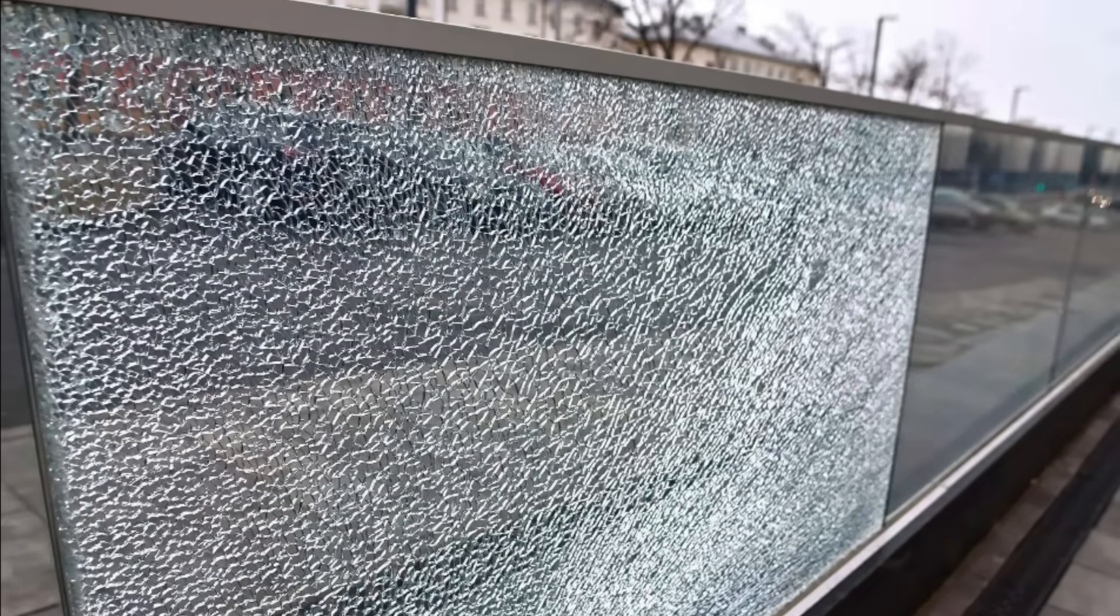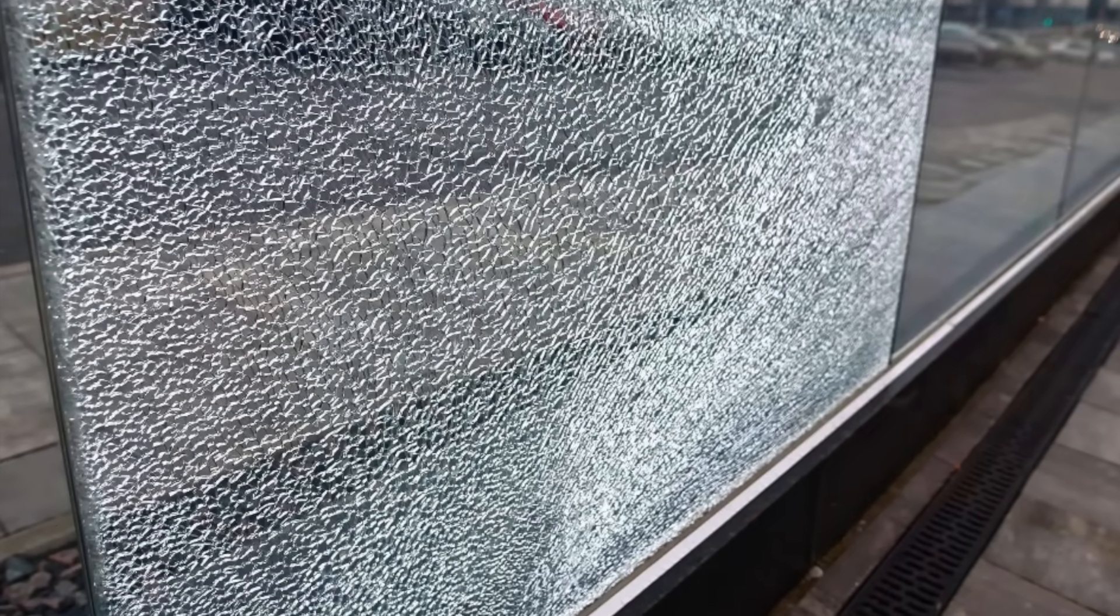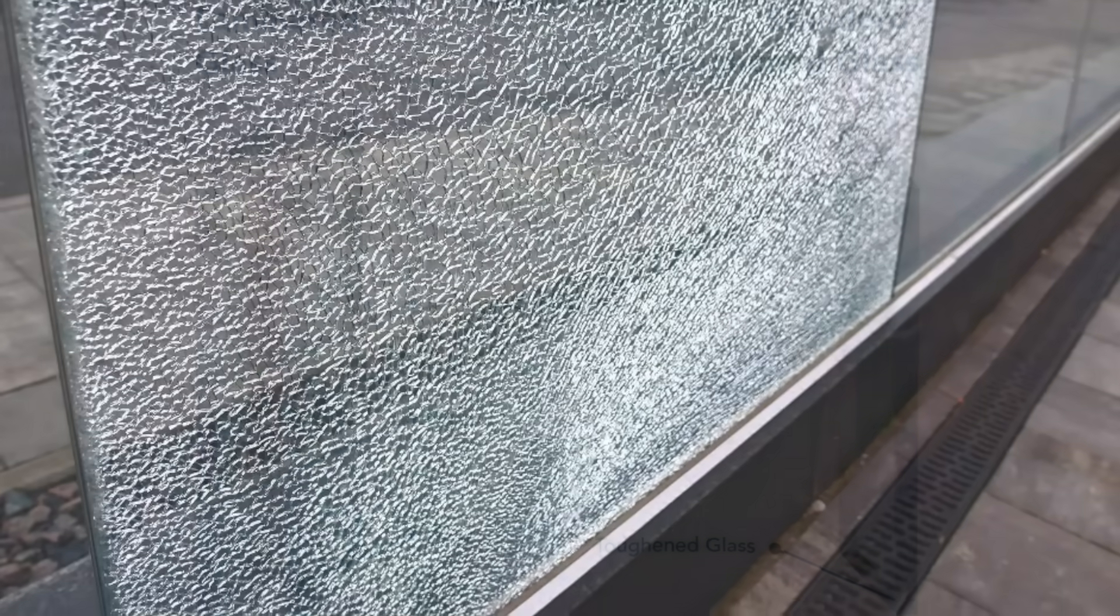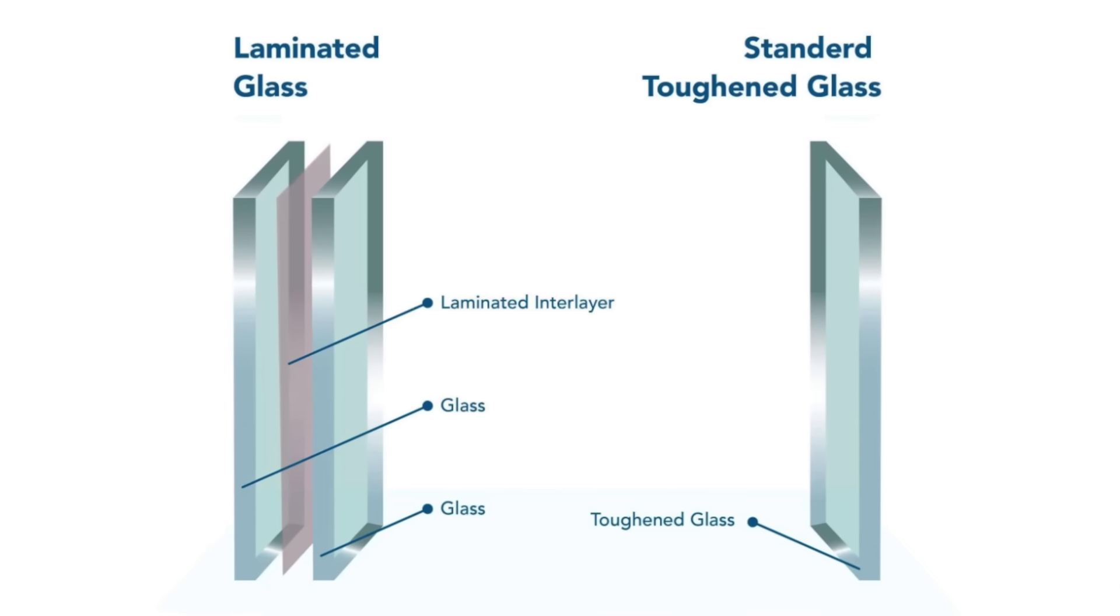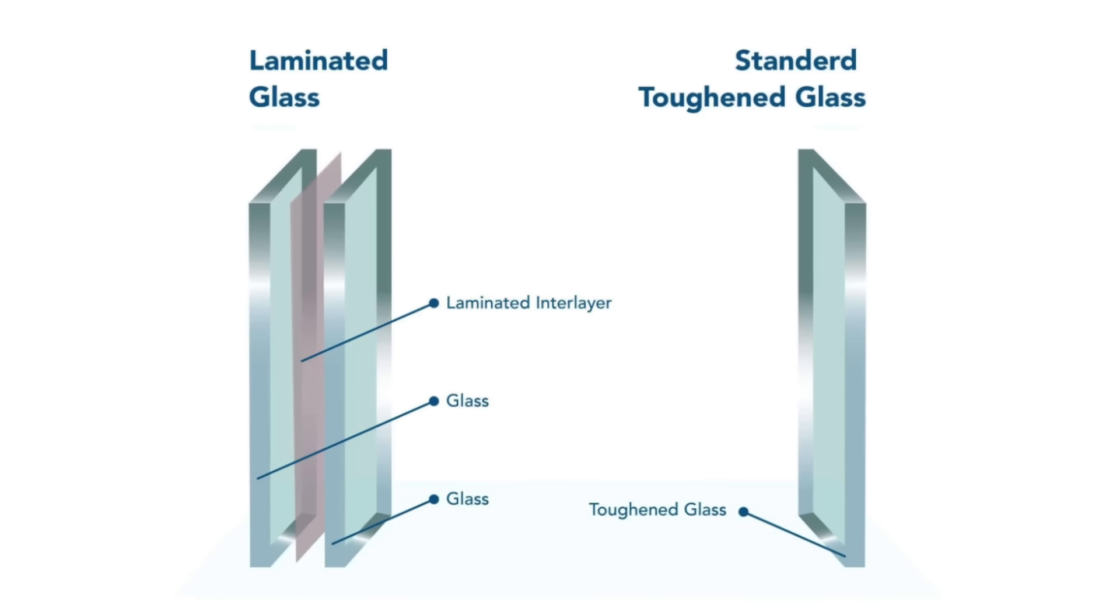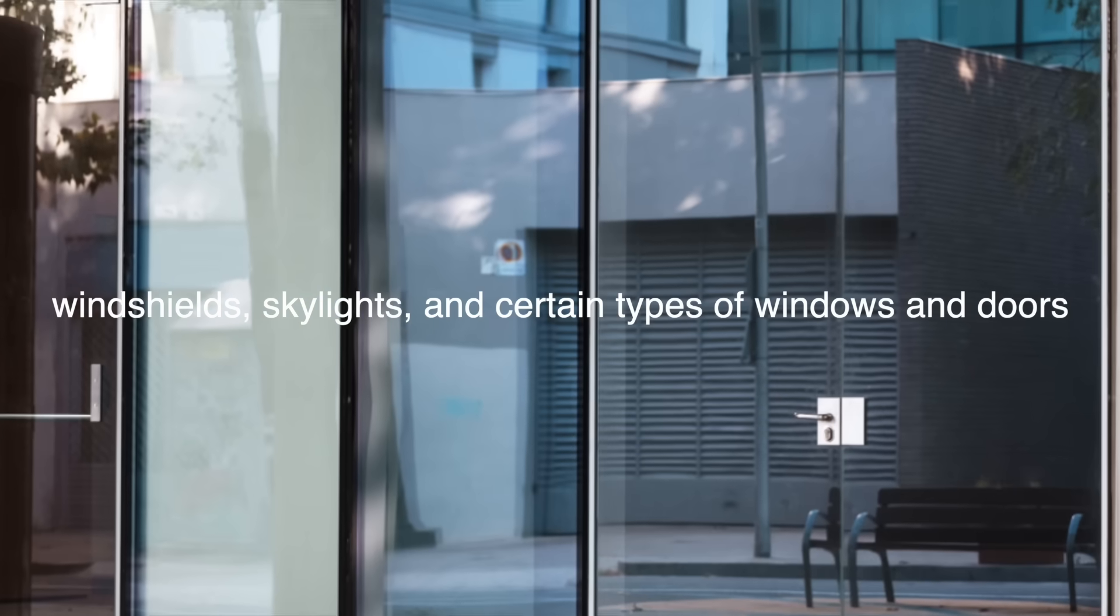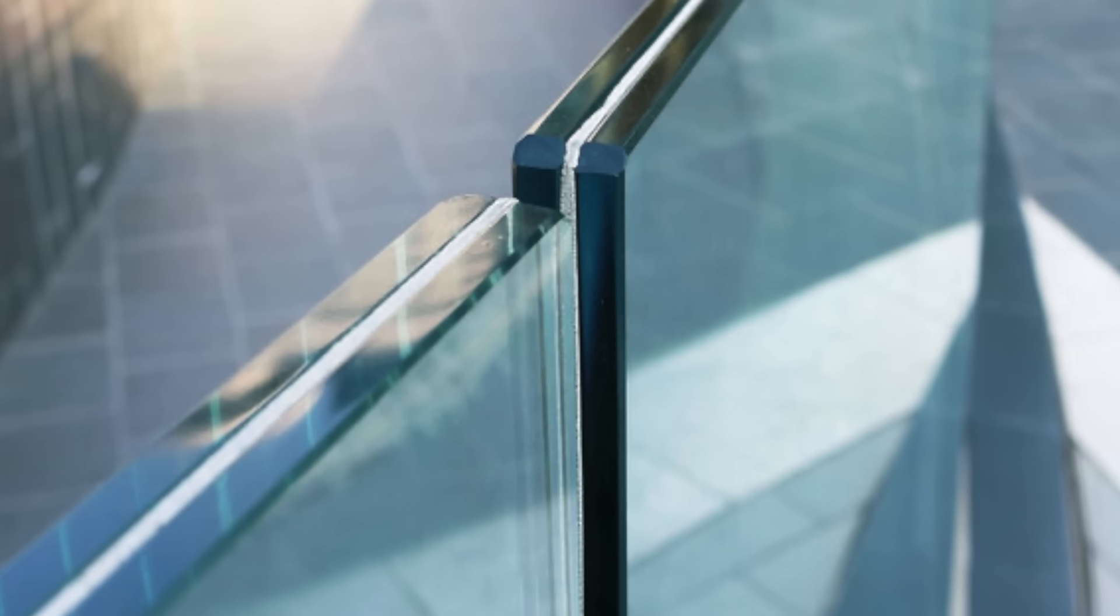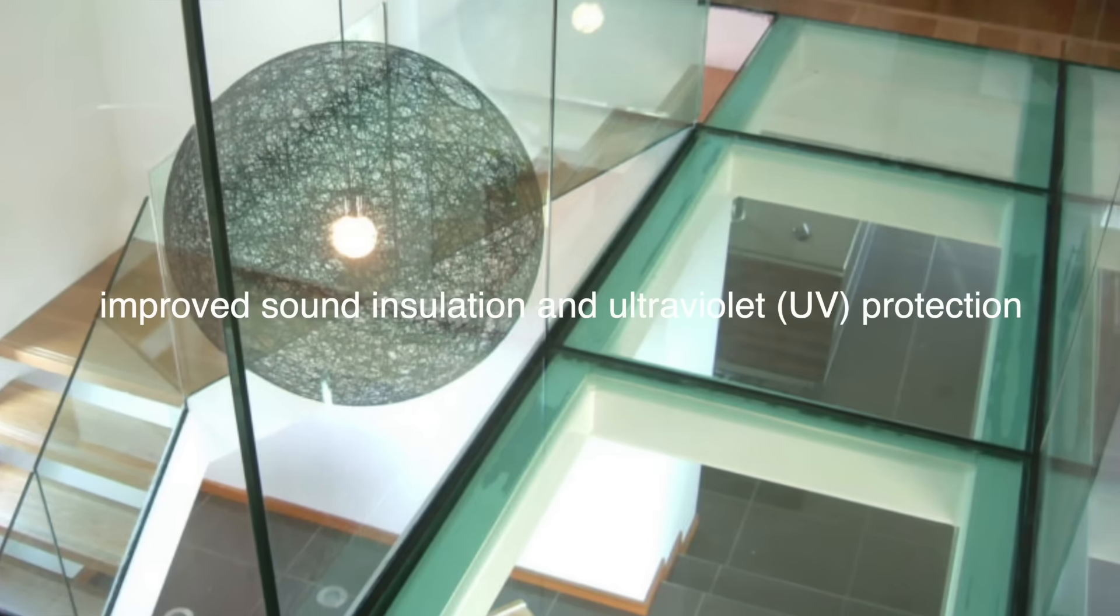The inner layer holds the glass layers together even when broken, preventing the glass from shattering into large, dangerous pieces. This makes laminated glass an excellent choice for applications where impact resistance and safety are critical, such as in windshields, skylights, and certain types of windows and doors. It also offers additional benefits such as improved sound insulation and UV protection.